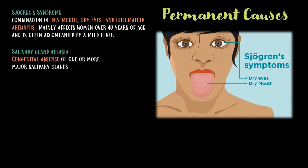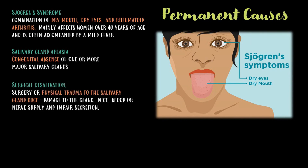Salivary gland aplasia is the congenital absence of one or more major salivary glands. Surgical desalivation — surgery or physical trauma to the salivary gland duct — may lead to damage of the gland or duct, blood supply, or nerve supply, and impair the secretion of saliva.